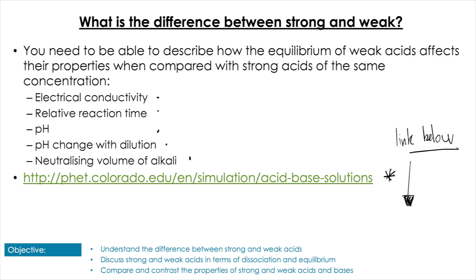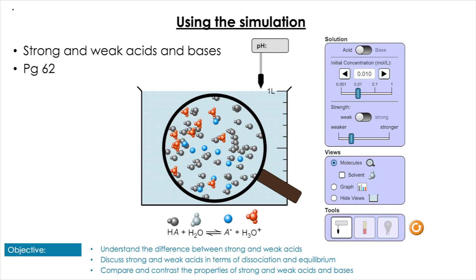In the top right hand corner you can choose whether you have an acid or a base, and you can choose the concentration increasing or decreasing as you go down this side panel. You can also choose the strength, so you can have weaker or stronger. So you're controlling the extent of the dissociation.